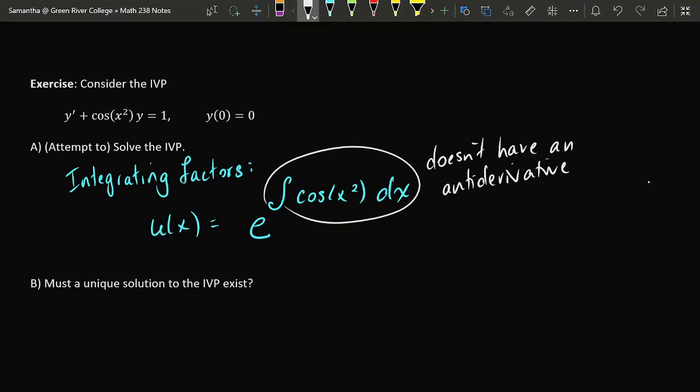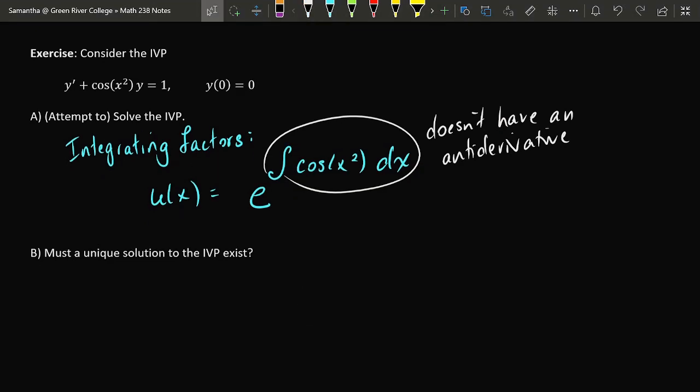So integrating factors falls flat as a method and so this would not be an IVP that we could solve by hand. We would have to dedicate computer resources to approximating the solution. But should I even try to approximate a solution? Must a unique solution to this initial value problem even exist?